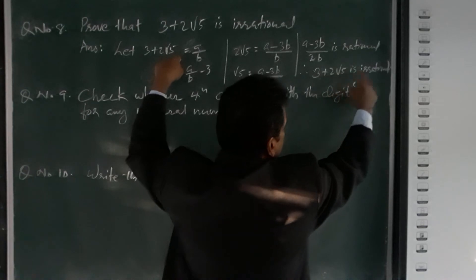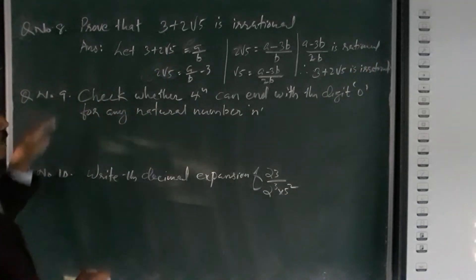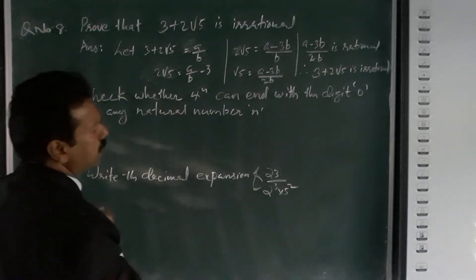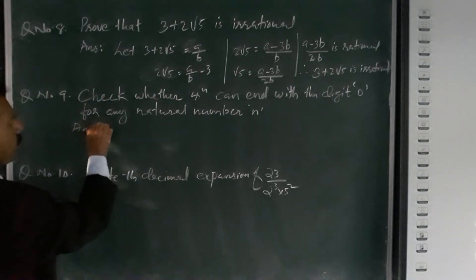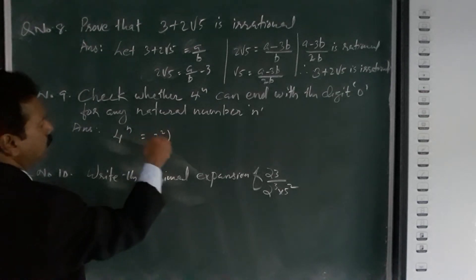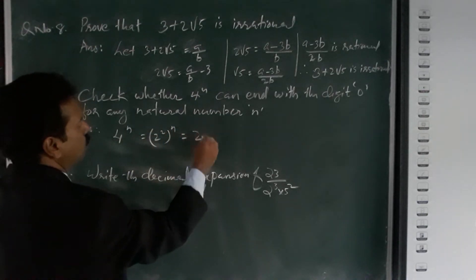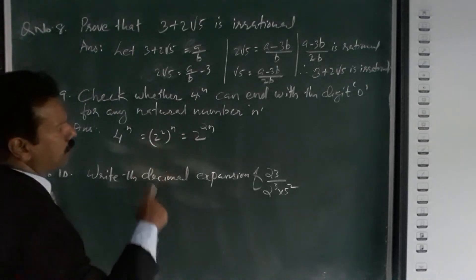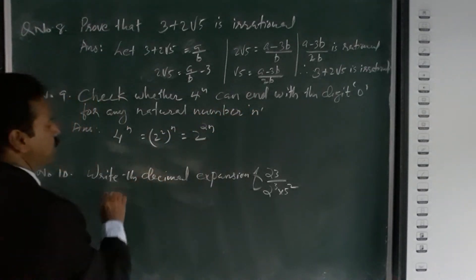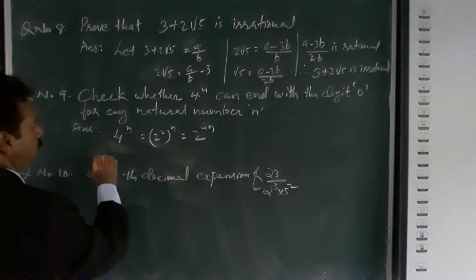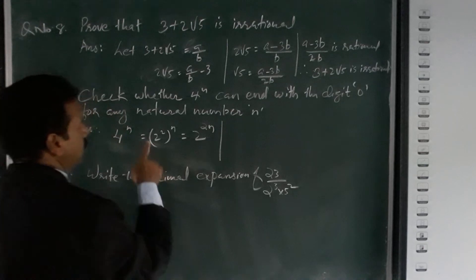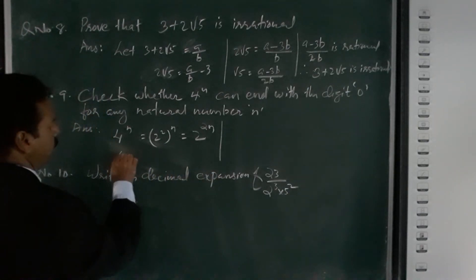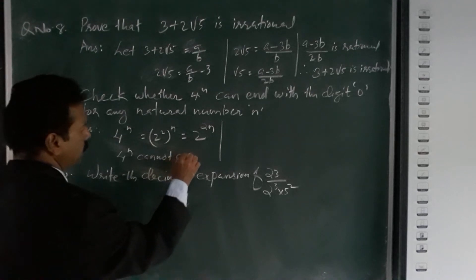Question number eight: check whether 4^n can end with the digit 0 for any natural number n. Now 4^n = (2²)^n = 2^(2n). For a number to end with 0, it must have 5 as a factor. In 2^(2n) there is no factor of 5. Therefore 4^n cannot end with the digit 0.